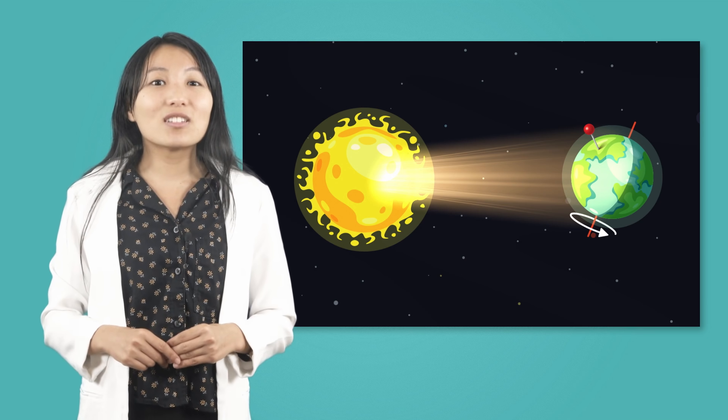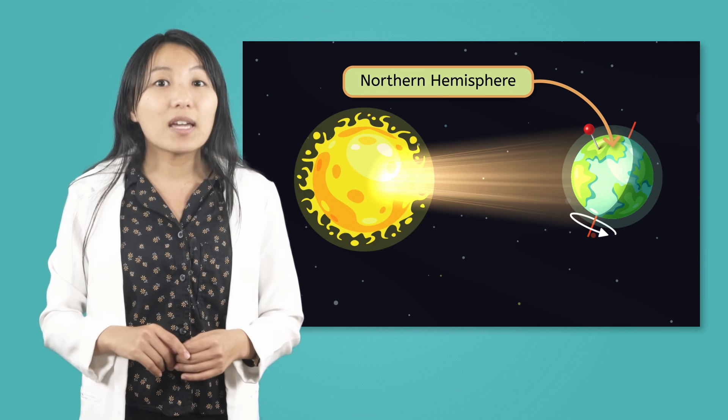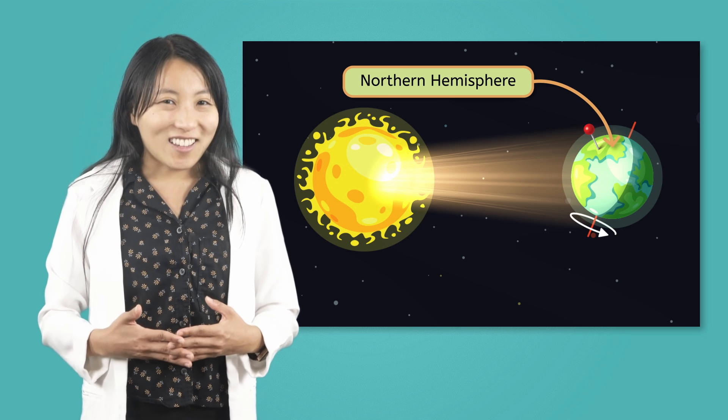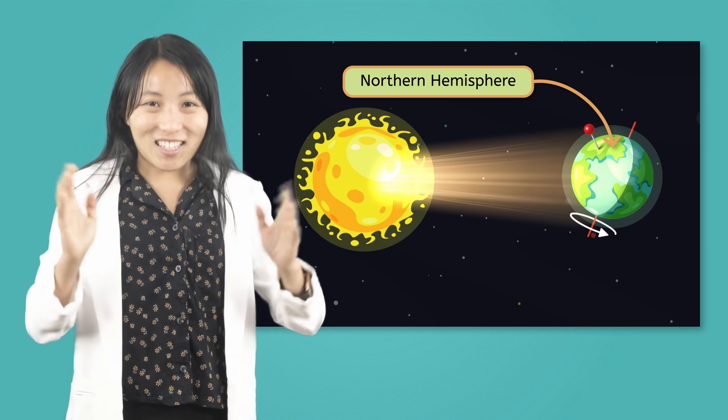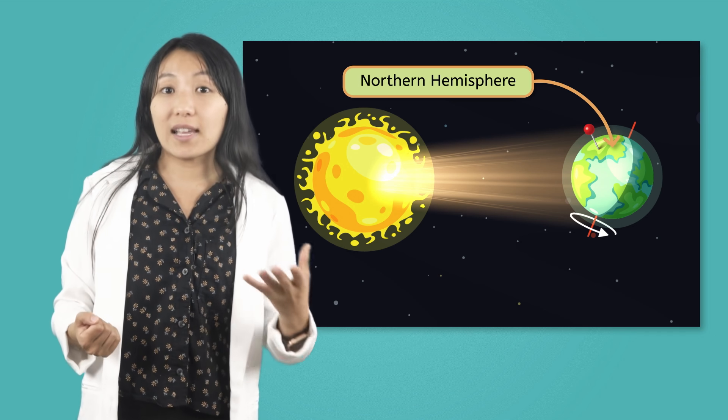My location in the Northern Hemisphere is now tilted away from the Sun. That means my area is receiving indirect sunlight. That can only mean one thing. It is winter! Indirect sunlight means cooler temperatures and less daylight.